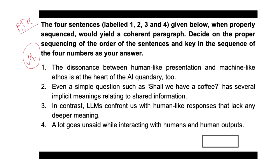So let's go to another Parajumble question. The direction here states that four sentences labeled 1, 2, 3, and 4, when properly sequenced, would produce a coherent paragraph. We need to decide on the proper sequence and key in the sequence of the four numbers as the answer.